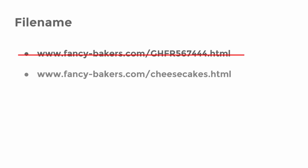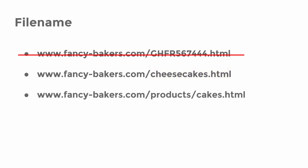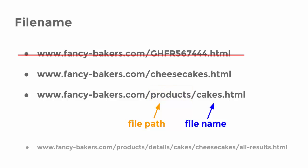Now let's talk about how to optimize file names. First, avoid any cryptic file names. Use a name which corresponds to the title of the web page. If possible, use a money keyword. If you have subdirectories, use them to categorize the sections of your web page — here, the identifier 'products' is used as a file path. However, avoid too long file paths.